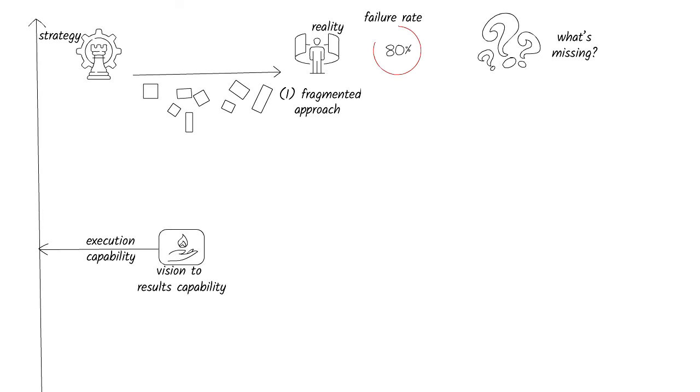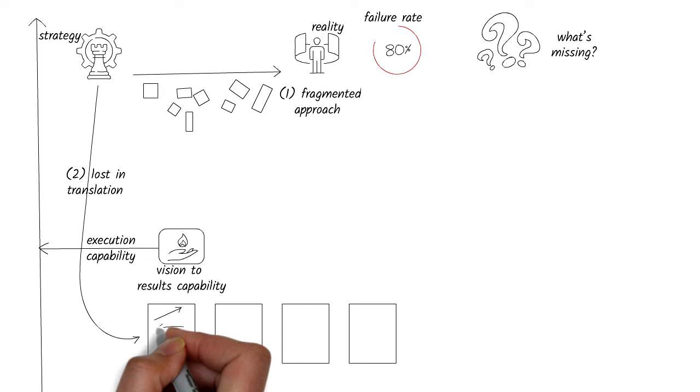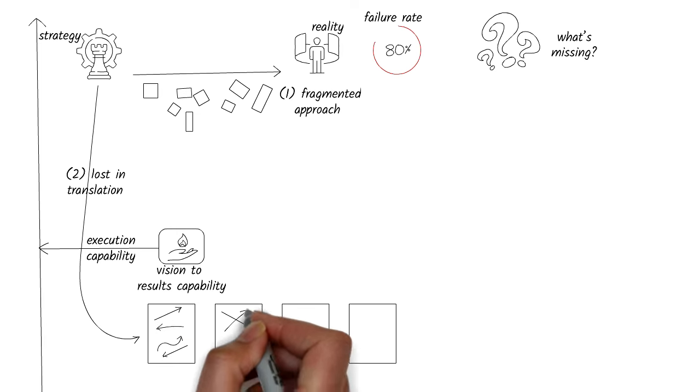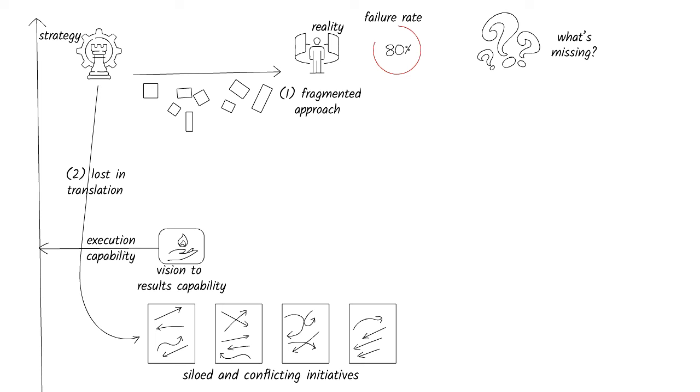The second key factor we'll call lost in translation. There's a big leap from broad strategies to the specific actions required to achieve them. The challenge is that most organizations translate strategy in silos, delivering laundry lists of initiatives and solutions that collectively can lead to complexity, duplication, fragmented experiences, and a loss of organizational agility.